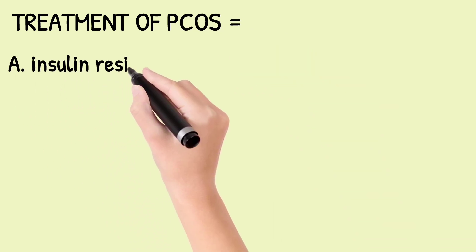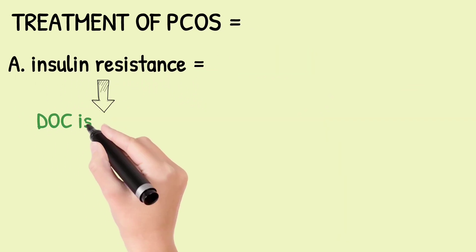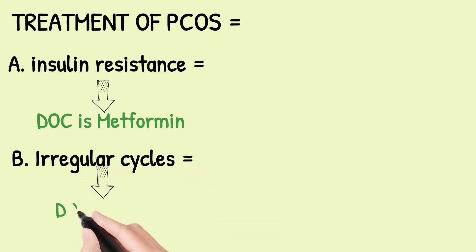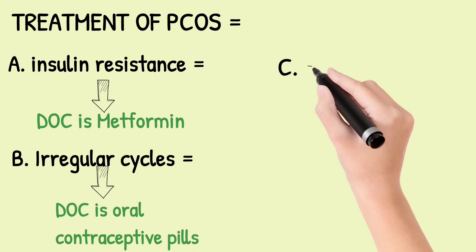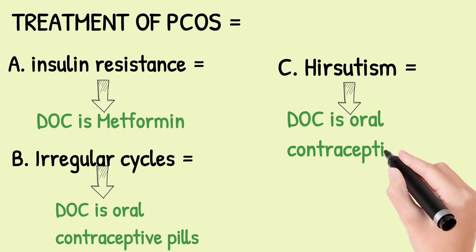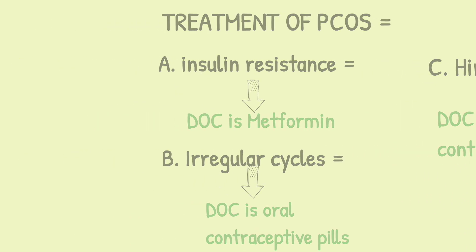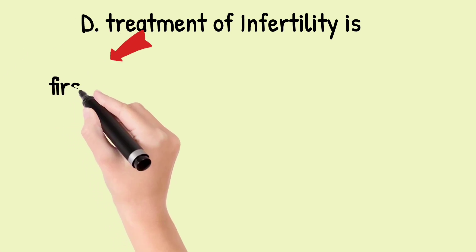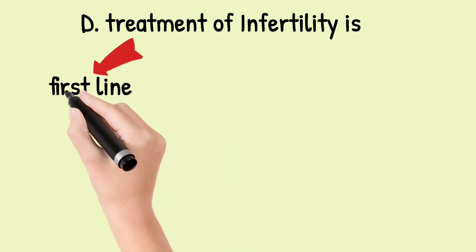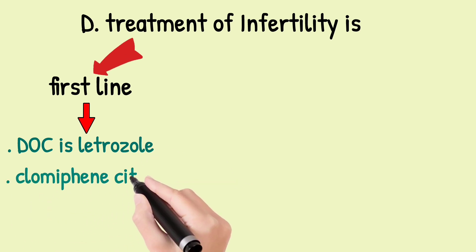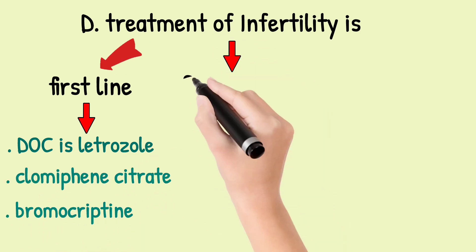Treatment of PCOS: for insulin resistance, we give metformin. For irregular cycles, the drug of choice is oral contraceptive pills. For hirsutism, the drug of choice is also oral contraceptive pills. For treatment of infertility, first-line drugs: the drug of choice is letrozole; other drugs are clomiphene citrate and bromocriptine.